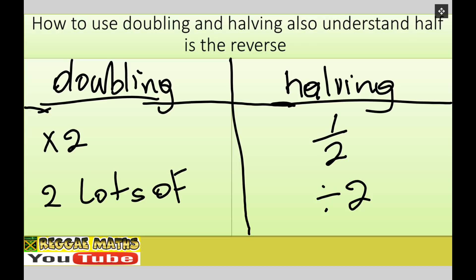So doubling is times-ing by two, two lots of. Half, as the fraction says, they're off sharing.